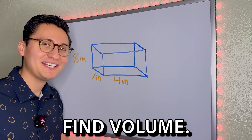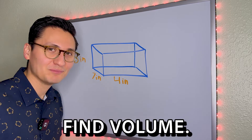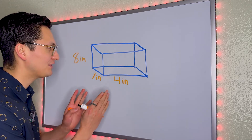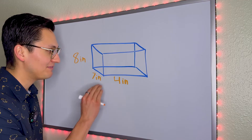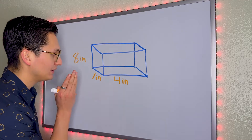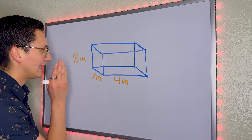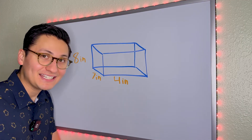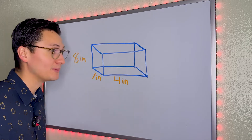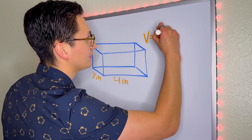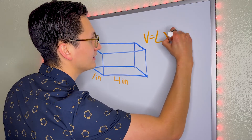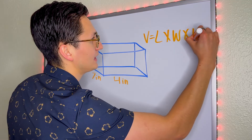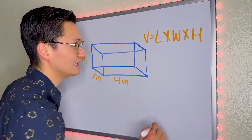This is how you find volume. Here we have a rectangular prism with the length, the width, and the height. In order to find volume, this is the formula: volume equals length times width times height.